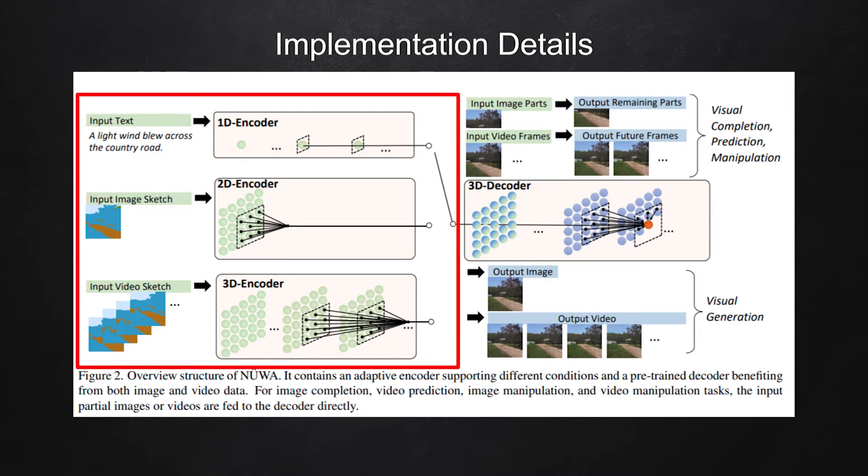In the encoder part, it's an adaptive encoder that can take different representations like text, image sketch, or video sketches. It works like a switch, so it can take text as input, or it could take image sketches or sequence of sketch images as well. The embedded representation from the encoder can then be fed into the decoder.